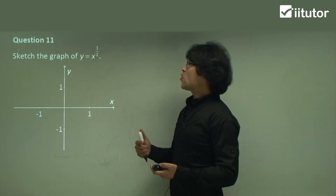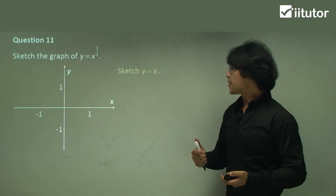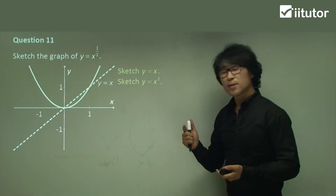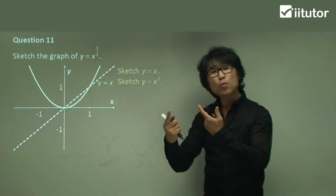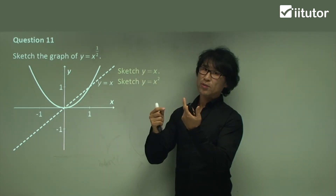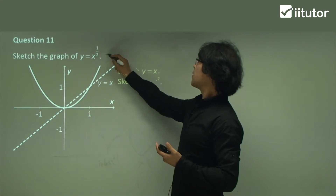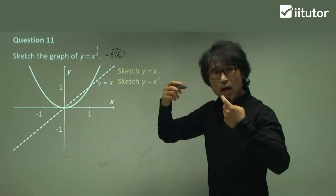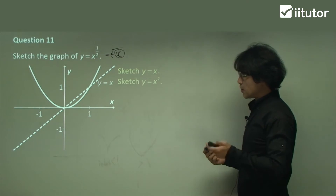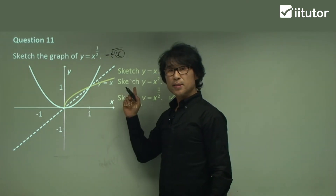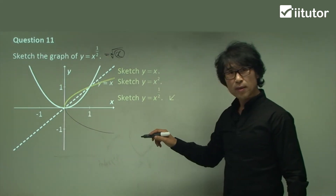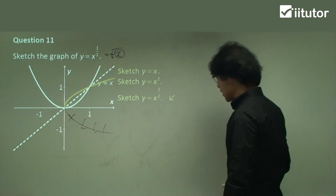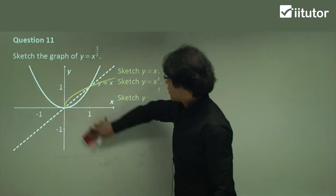Question 11: x to the power of 1 over 2. We are going to sketch y equals x. These two graphs have a relationship regarding the inverse function, but you have to be very careful. x to the power of 1 over 2 equals the square root. Negative numbers are not allowed under the square root, so therefore the graph will only be the right-hand side. Just be careful — only the positive side.